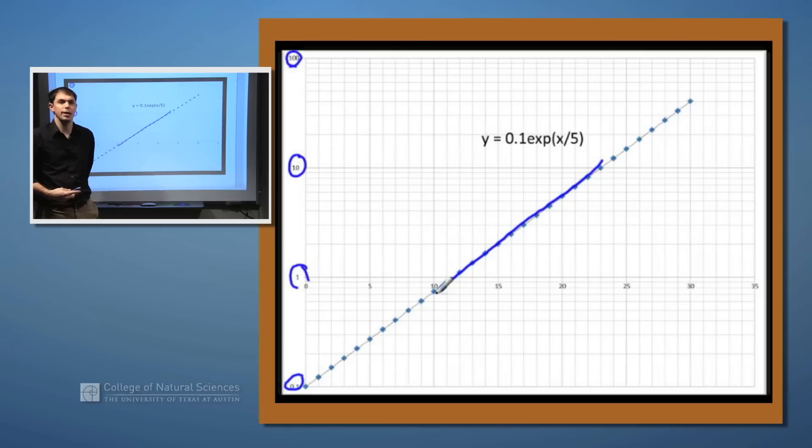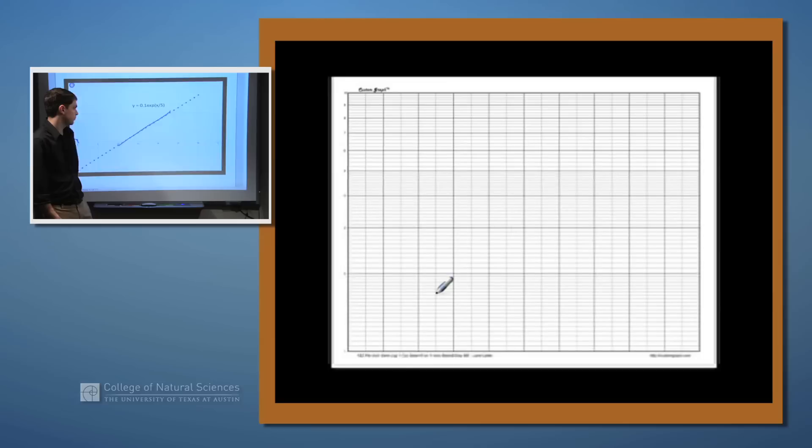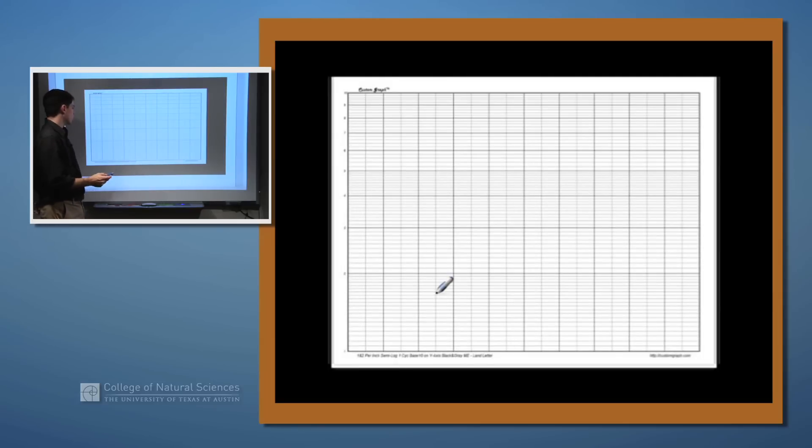So semi-log paper enables us to take a graph that was exponential, either decaying or an exponential growth, and convert it into something that visually looks like a linear equation. And the graph paper that you'll see this is called semi-log graph paper because one of the two axes is logarithmic.